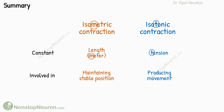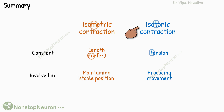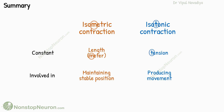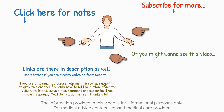Now let's have a quick summary. In isometric contraction, the length of the muscle remains constant, and they help maintain a stable position. In isotonic contraction, the muscle shortens but the tension remains constant throughout the contraction, and they are responsible for most movements. Many physical activities involve a combination of both. That's it for this video. Thank you.